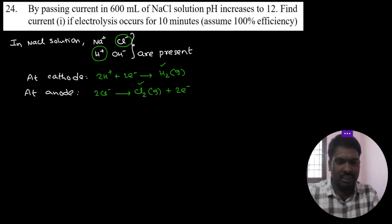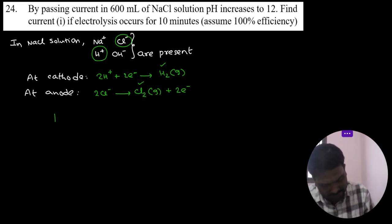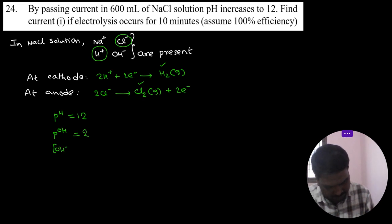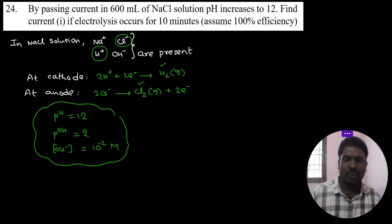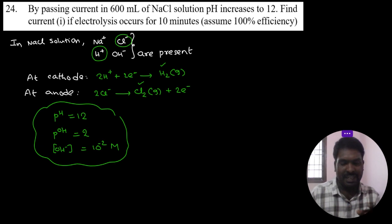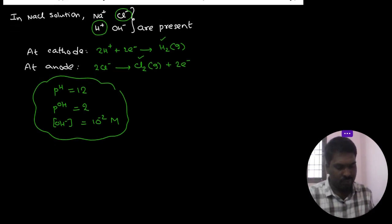The resulting solution is basic. pH = 12 is given, so pOH = 2, and therefore the OH⁻ concentration is 10⁻² molar. This 10⁻² molar is both the OH⁻ concentration and the NaOH concentration.